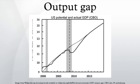If this calculation yields a positive number, it is called an inflationary gap and indicates the growth of aggregate demand is outpacing the growth of aggregate supply, possibly creating inflation. If the calculation yields a negative number, it is called a recessionary gap, possibly signifying deflation.